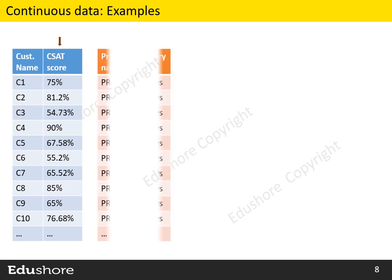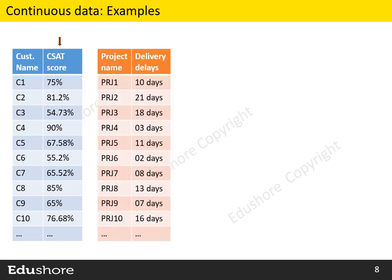Another example: we capture the delivery delays or project completion delays for each project. Even though the data consists of whole numbers, since the data is related to time and is a result of some measurement or calculation, it is continuous data.